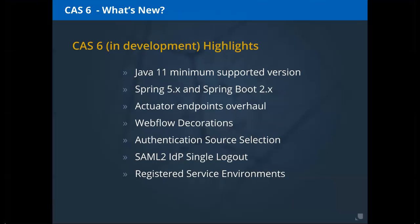CAS 6 is in the release candidate stage. It supports Java 11 LTS. There are many questions about Oracle's rapid Java release strategy: Java 8 commercial support ends January 2019, while OpenJDK Java 8 is supported until December 2020. Java 11 is the new long-term support, looking to run until approximately 2023, available through OpenJDK and derivatives. CAS 6 supports Java 11 with Spring 5.x and Spring Boot 2.x as major library upgrades.